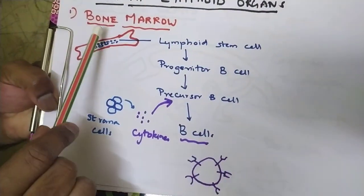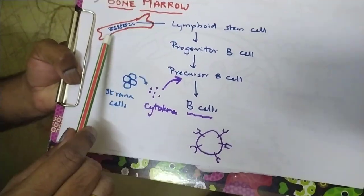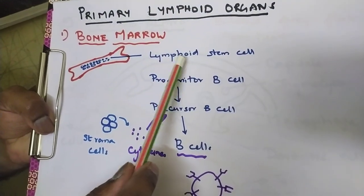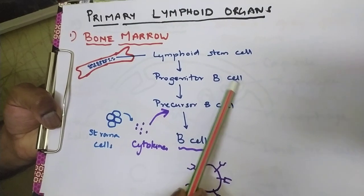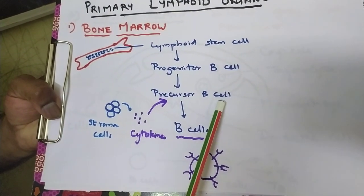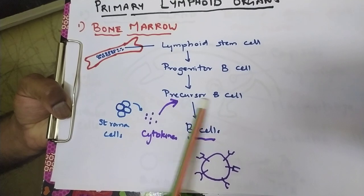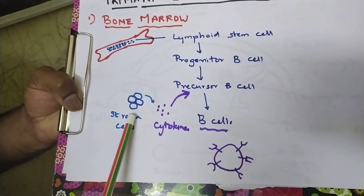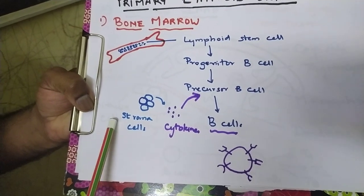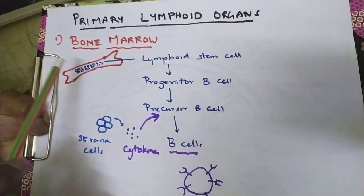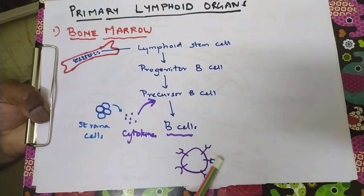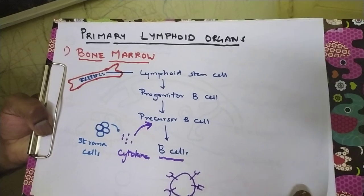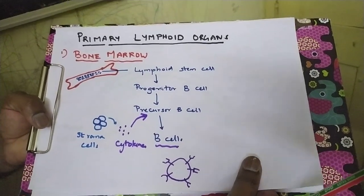Primary lymphoid organs include bone marrow as the first one. The bone marrow has stem cells — lymphoid stem cells — which differentiate into progenitor B cells, then multiply to become precursor B cells. These precursor B cells are further converted to mature B cells through cytokines produced by the stroma cells, which are also part of the bone marrow. These B cells carry diversified antibodies on the surface, responsible for the initial humoral immune responses.